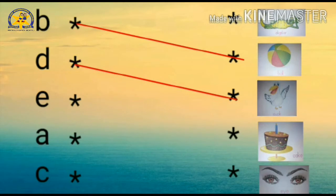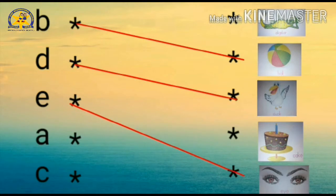Now the next letter is... Letter E! Correct! So we have to match the letter E with... E for eyes! Correct! So match the letter E with eyes. Nice! Very good!